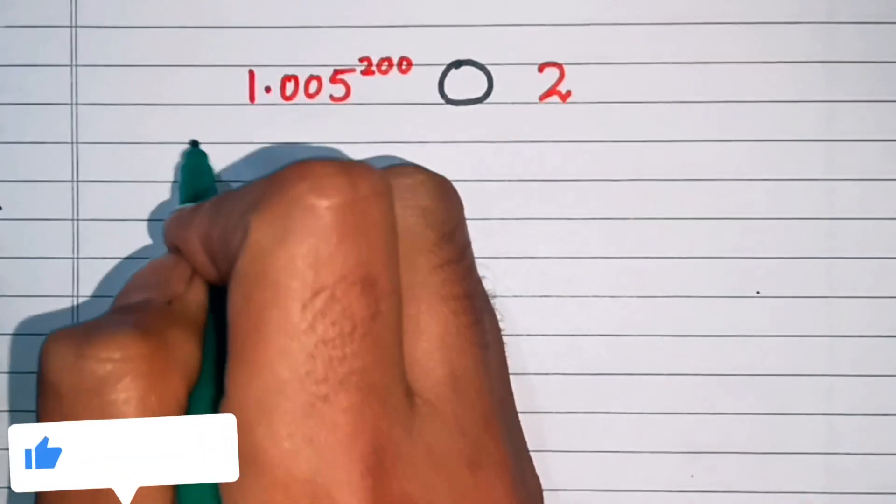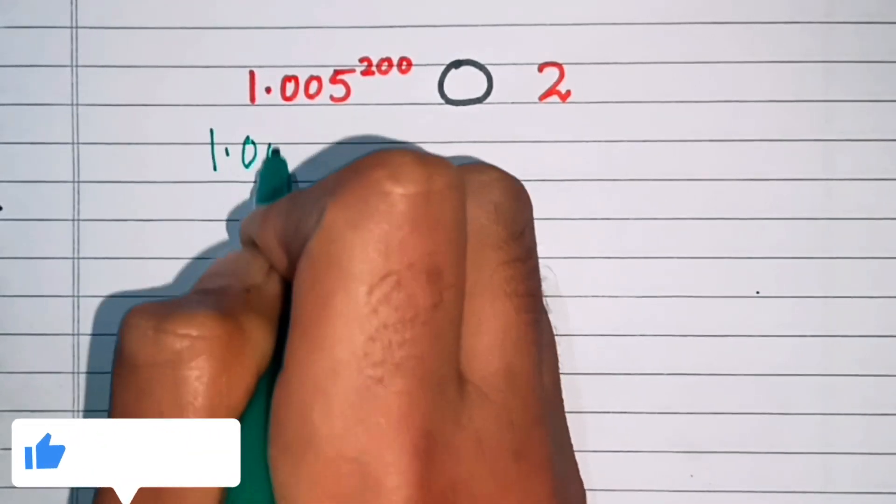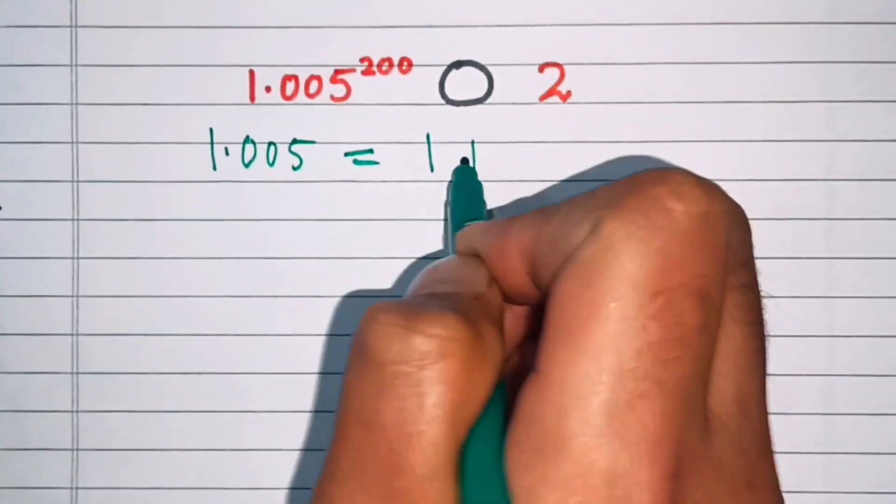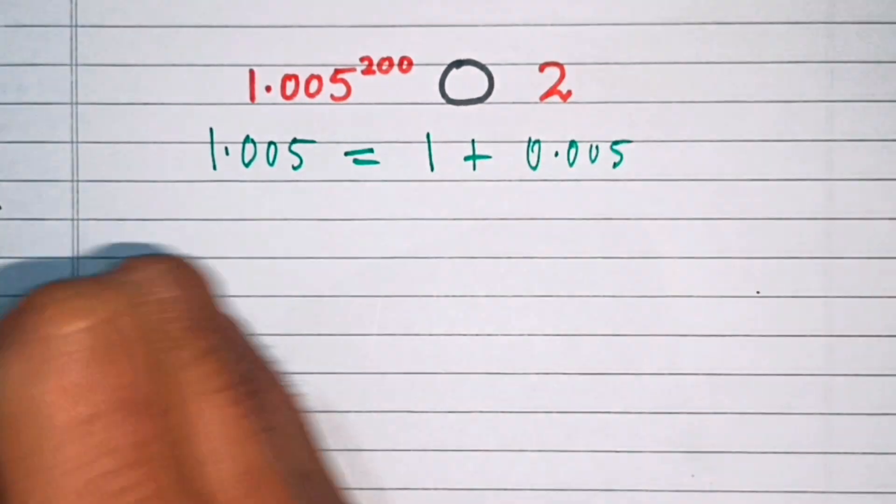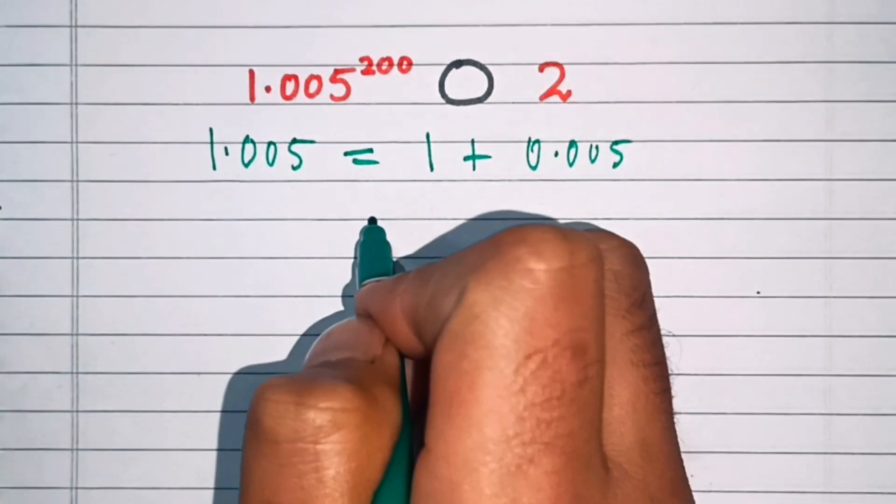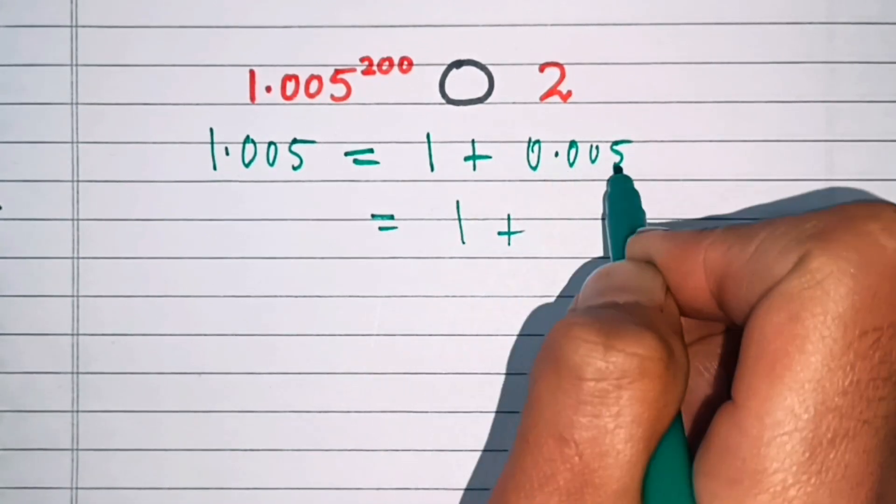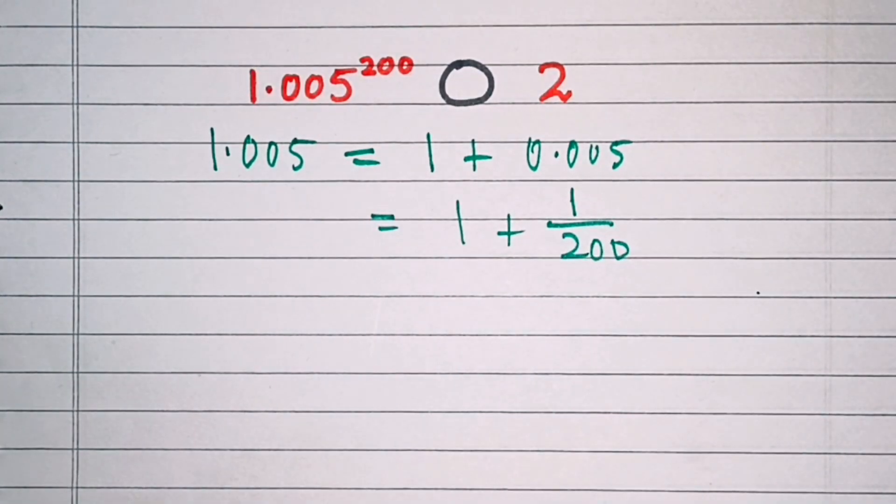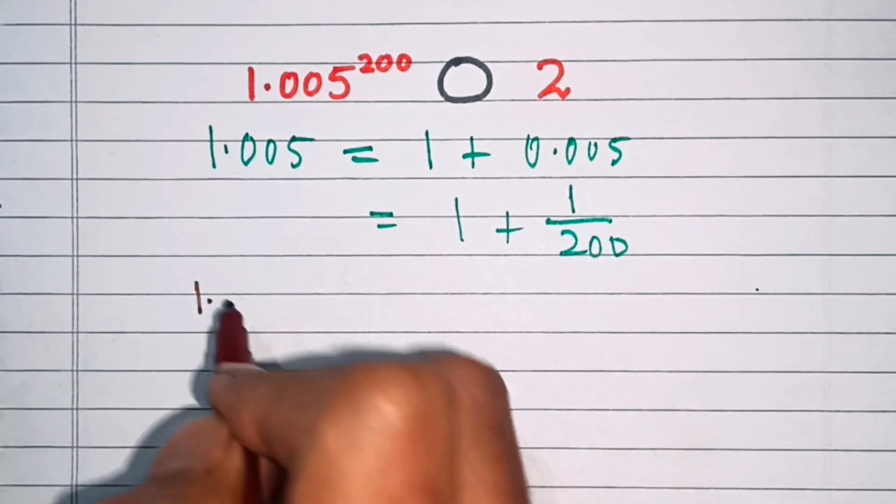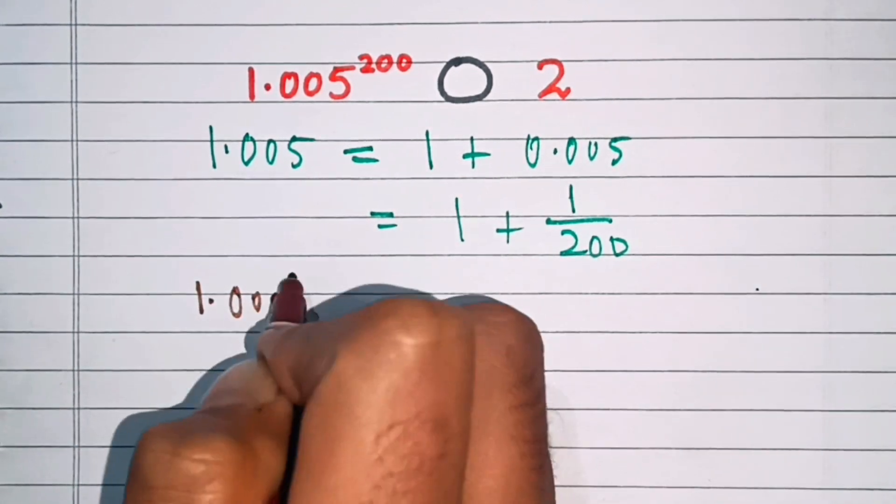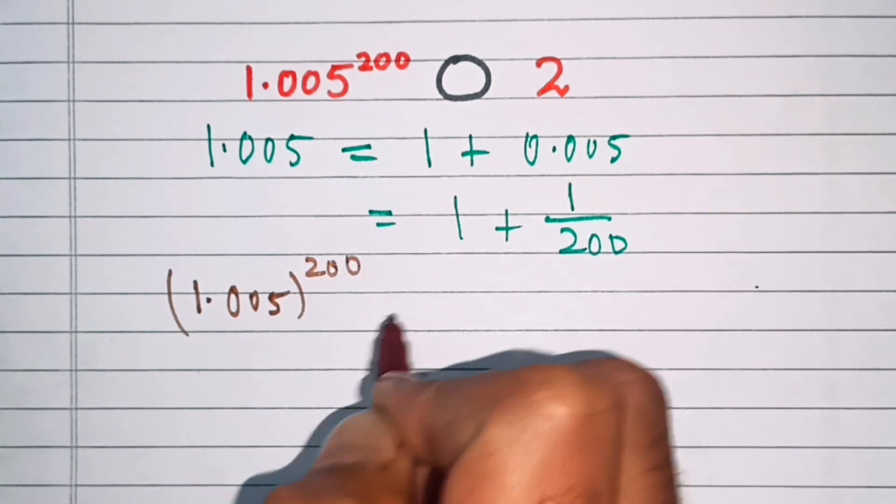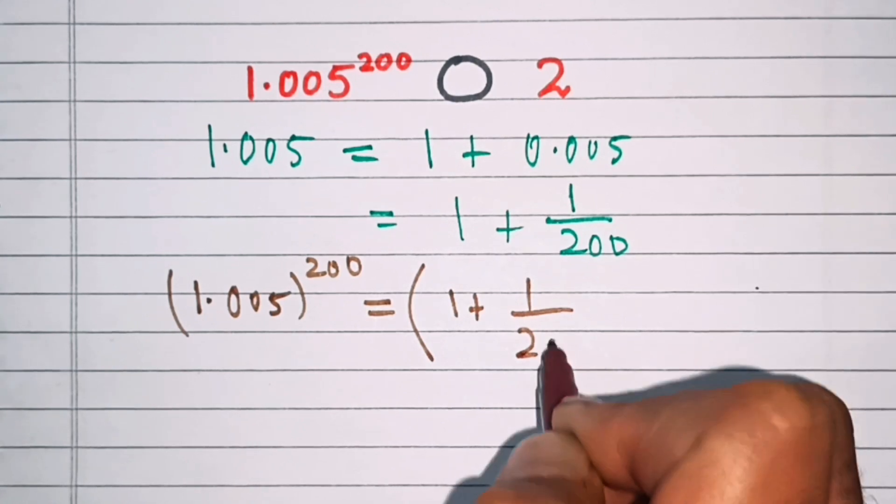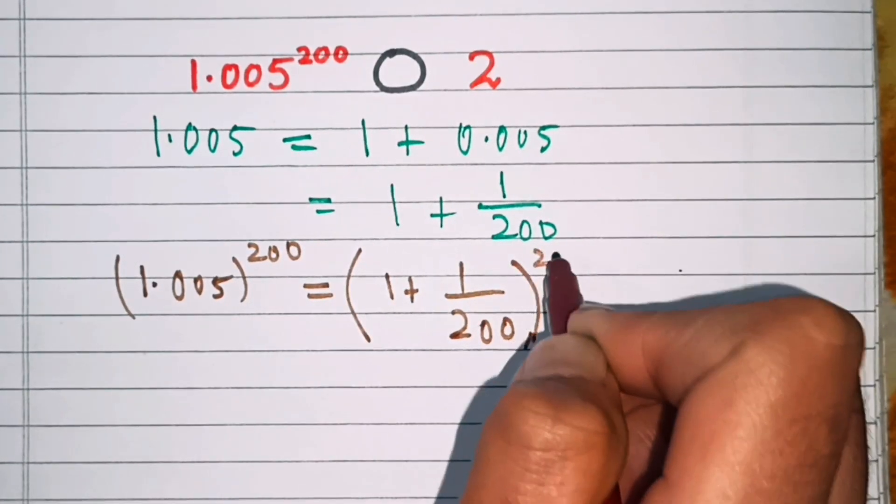We will start with this number, 1.005. We will expand this. This is 1 plus 0.005, that is equal to 1 plus 1 over 200. So that means 1.005 power 200 is equal to 1 plus 1 by 200 whole power 200.